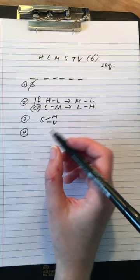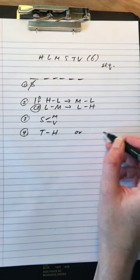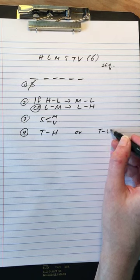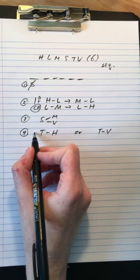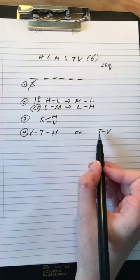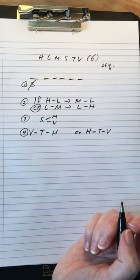The table is earlier than the harmonica or the table is earlier than the vase, but not both. So if the table is earlier than the harmonica, it's later than the vase, and vice versa. So T has to be between V and H.